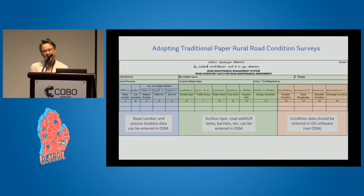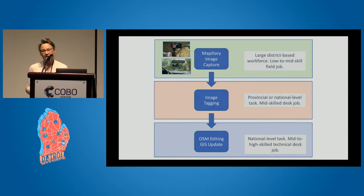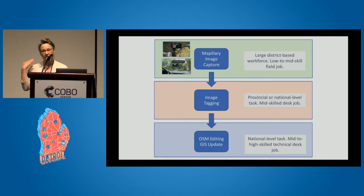We took their paper-based forms and identified which fields could conceivably be used as tags in OSM, and which fields — more temporal ones like potholes and landslide risk — would belong in another database. We set up a workflow where district-level transport staff, relatively low-skilled, collect Mapillary imagery. Higher-level skilled staff tag the imagery for assets and temporal issues. And our highest-skilled staff in the capital city update the OpenStreetMap and the road database.